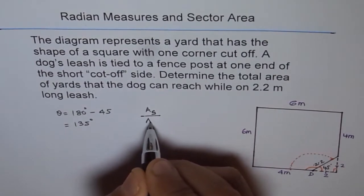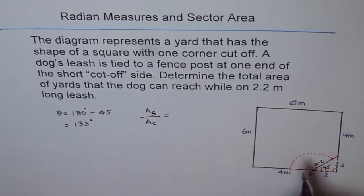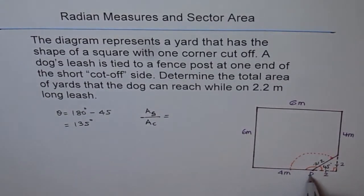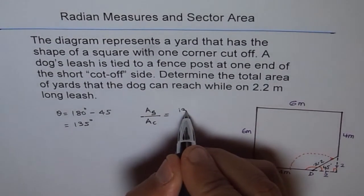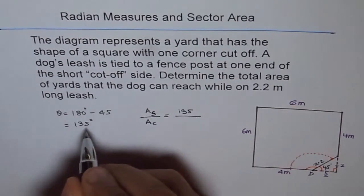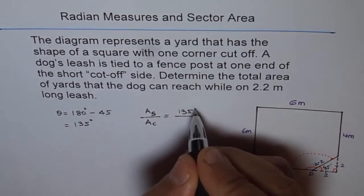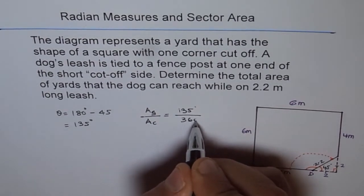So area of sector, this angle which is 135 degrees, and area of the circle which is 360 degrees. So we have 360 degrees here.